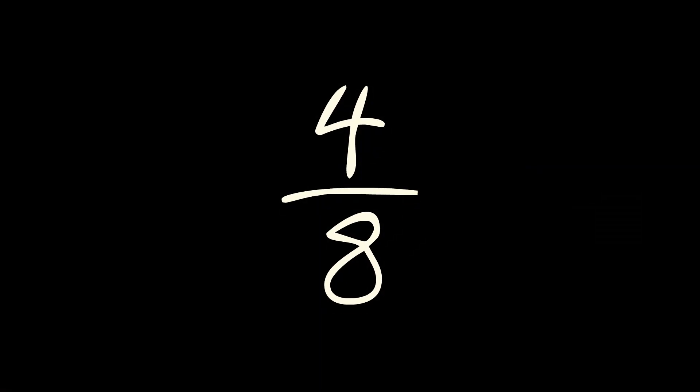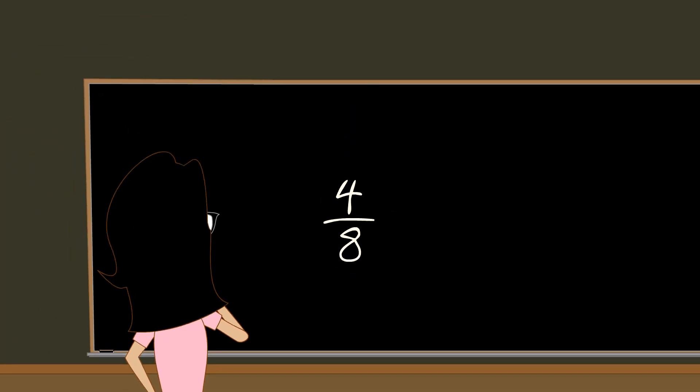In order for a fraction to be reduced, it must have a numerator and denominator which can both be divided by the same number. In other words, they must both have a common divisor. But how do we know when this is the case?